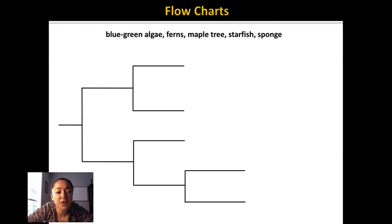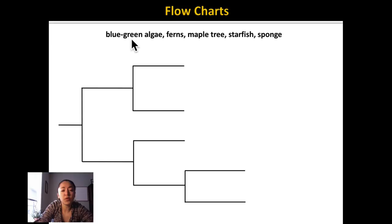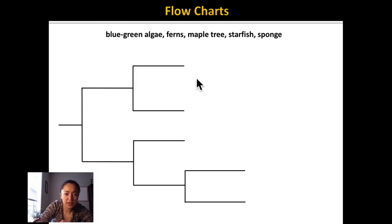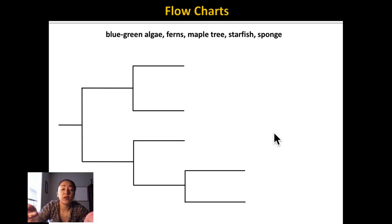Let's do a practice flowchart. I have listed a couple of different organisms: blue-green algae — remember, blue-green algae is a photosynthetic type of bacteria, and it's listed on page 141. Next is ferns, then maple trees, starfish, and sponges. I want you to use this backbone of a flowchart I have constructed here. Pause this video and see if you can fill out the characteristics correctly that would go into each branch, then list the correct organism at the end of each branch. There's more than one correct answer when doing these flowcharts — you just have to make sure everything makes sense.